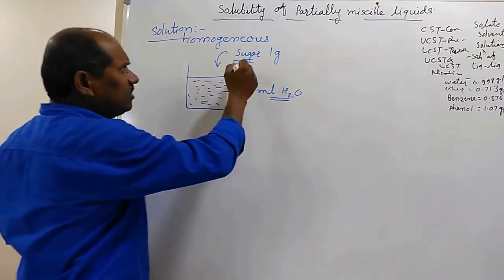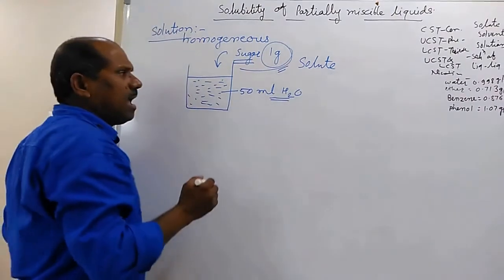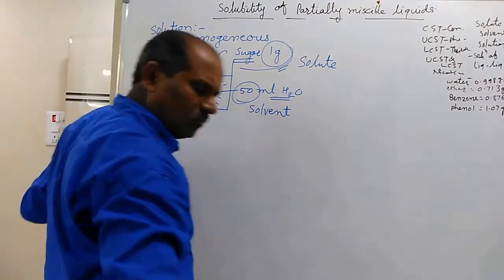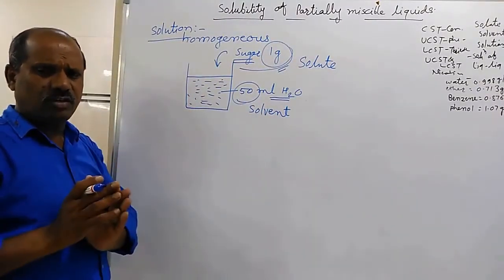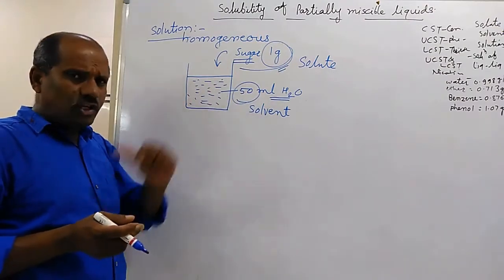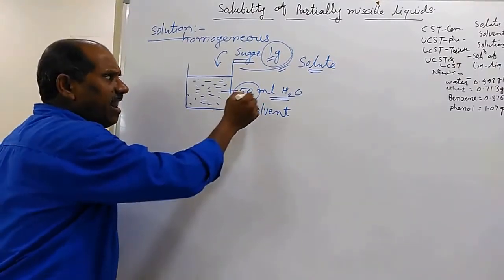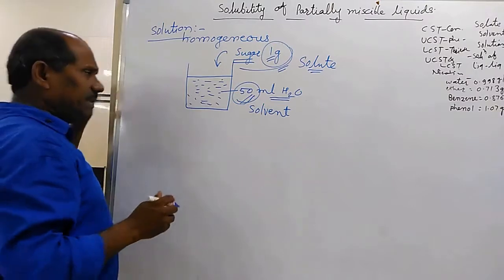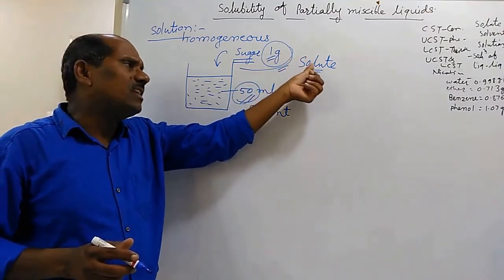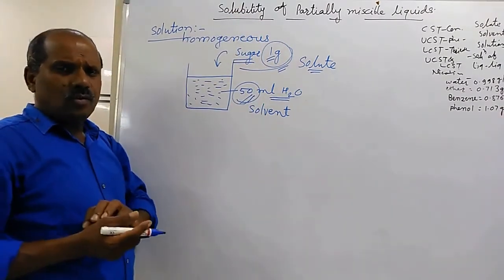In this solution, the substance which is in a lesser quantity is called the solute, and the substance which is in a larger quantity is called the solvent. In this example, sugar is only 1 gram — being in lesser quantity, it is the solute — and water is 50 ml — being in larger quantity, it is the solvent.